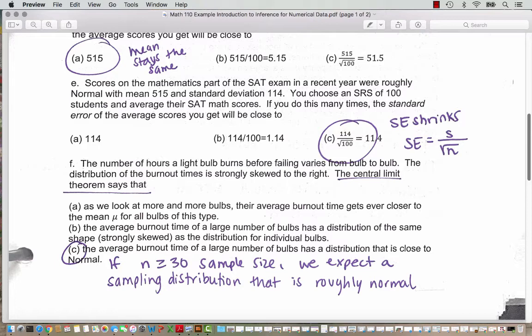So here we think about the standard error formula for numerical or quantitative data. We know when we're sampling that the distribution is going to become more compressed because the mean score of 100 students is going to be much closer to the population mean than individual scores for single students. And so our formula is to take the standard deviation and divide by the square root of n by the square root of the sample size.